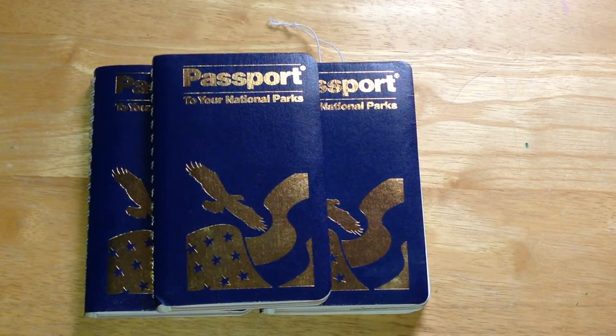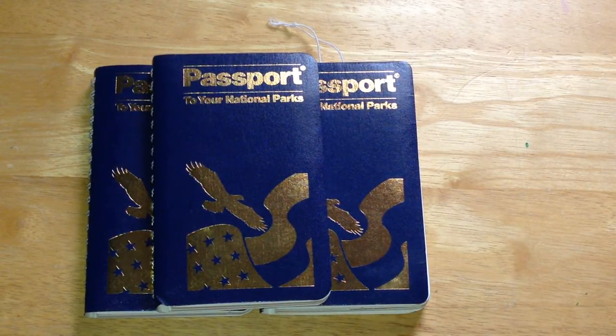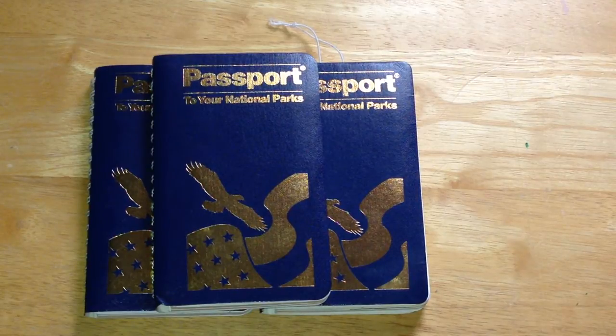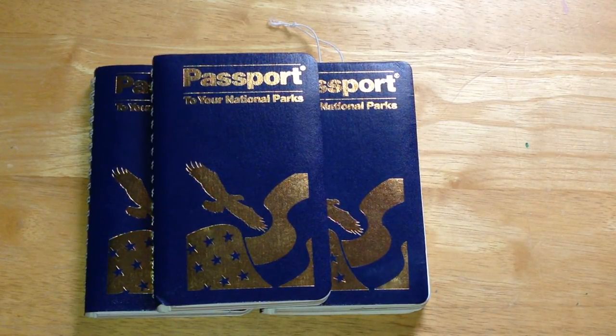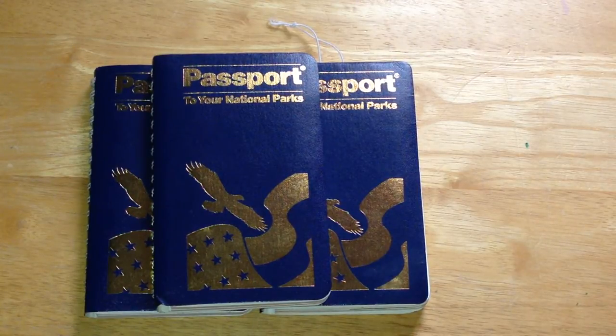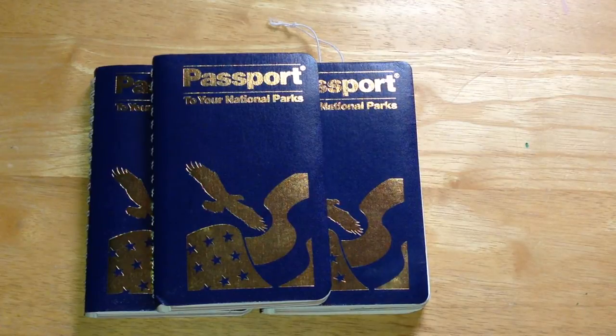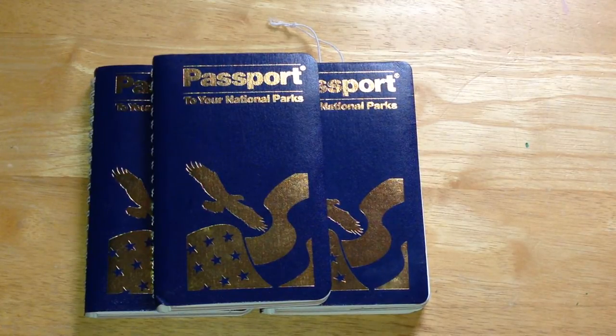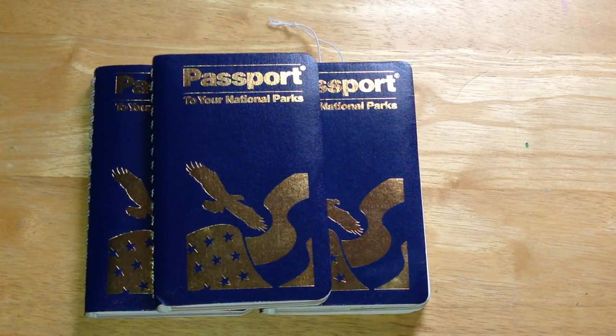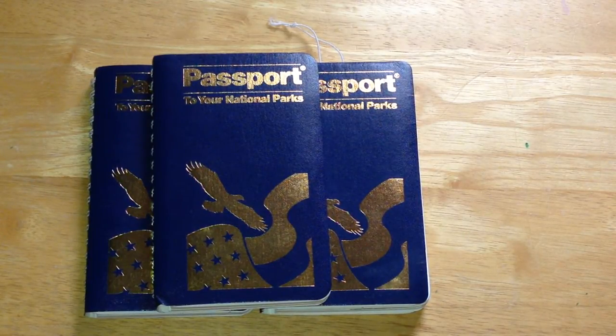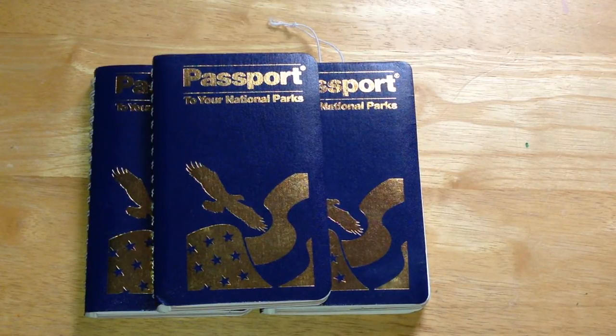One of the ways that you can remember and have a sort of memento is by getting a national park passport by Eastern National. These retail for about $15-$20 depending on where you get them. Usually you pick one up at a national park visitor center. I haven't been able to find them online except for used, which - why would you want someone else's memories? I don't understand that.